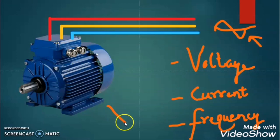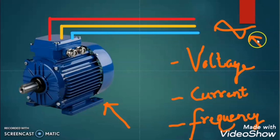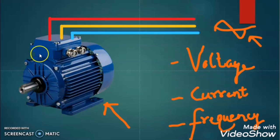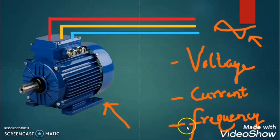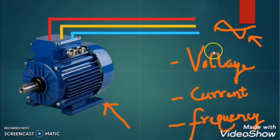The second option is we need to play with the construction of the motor in order to change the speed of the motor. So we have two options: either we have to do some alteration in the motor itself, or we have to do the alteration in any of the parameters of the power supply.